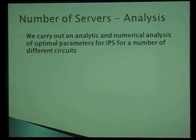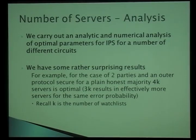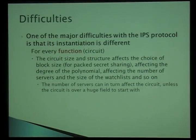We carried out both an analytic and numeric analysis, running scripts over large ranges of parameters. We found surprising results: for the two-party case with a plain honest-majority outer protocol, 4k servers is optimal (where k is the number of watch lists). Taking 3k looks asymptotically the same, but in practice leads to needing more watch lists and more servers for a given error probability. Also, for every function or circuit you want to compute, you need different optimal parameters, and these change again as the number of clients varies.